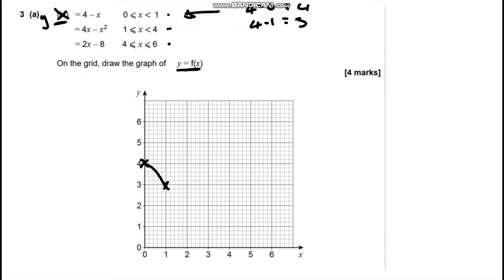Now this next one, if we put in x equals 1 into that we're going to have 4 lots of 1 take away 1 squared which is 3, which is where our last part of this function finished off. Now if we put in x equals 4 into this we're going to have 4 lots of 4 take away 4 squared which is going to be 0. So x equals 4, this graph is 0.